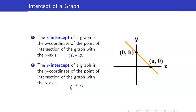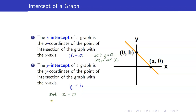Notice how we get the x-intercept of a graph. Since if you are at an x-intercept, your y-coordinate is equal to 0, you just set y equal to 0 and solve for x. If you are the y-intercept of a graph, then your corresponding x-coordinate is equal to 0, so you set x equal to 0 and solve for y.